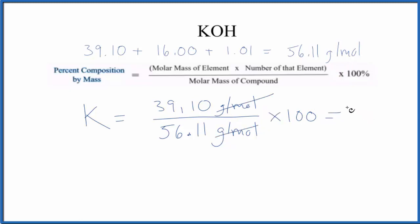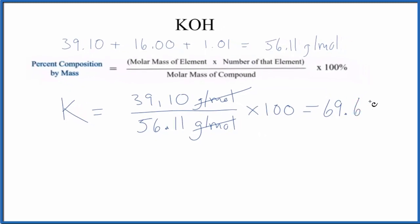We end up with 69.68%. And that means if you have a sample of KOH, you look at the mass, 69.68% of the mass is due to the mass of the potassium. Let's do the oxygen next.